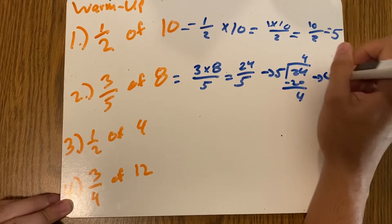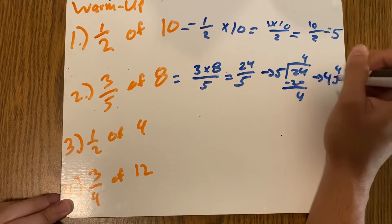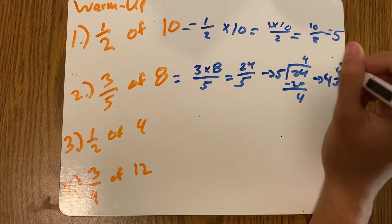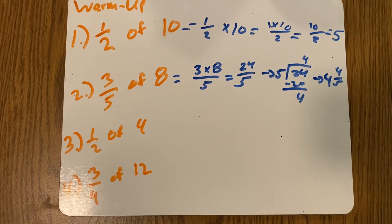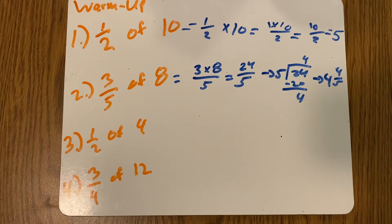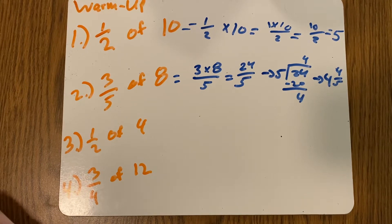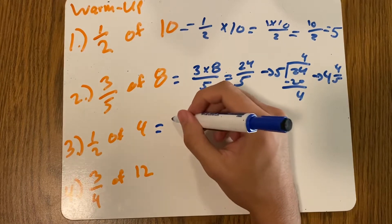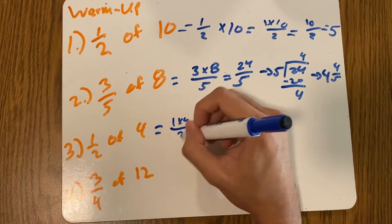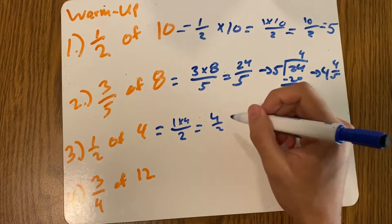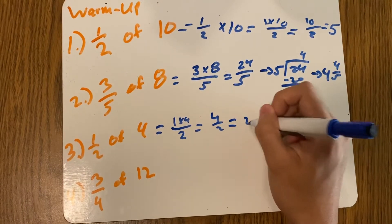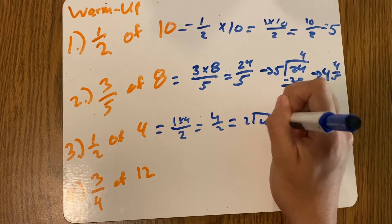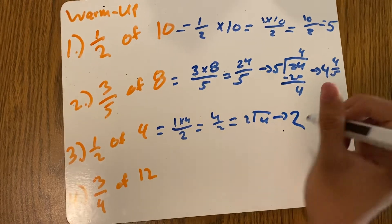Now I am going a little bit quickly on this because hopefully this is review, right? Hopefully it's not anything new. But let's keep going. Half of four: one times four over two. So that is four over two. Four over two, that's just four divided by two, and that is two.